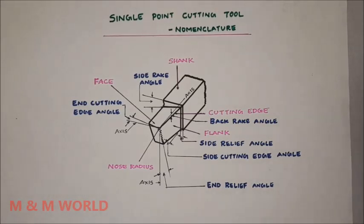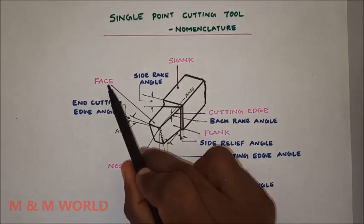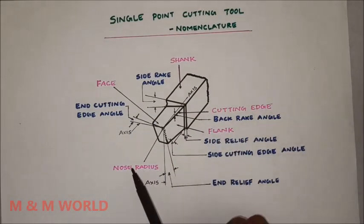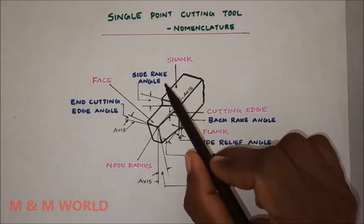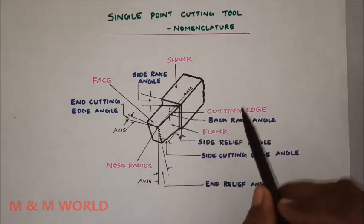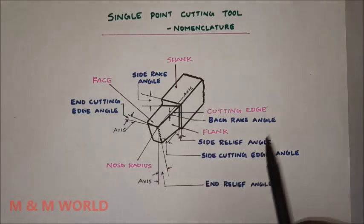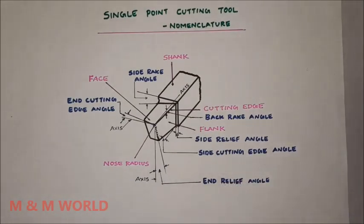Next is the nomenclature of a single point cutting tool, which includes various tool elements and tool angles. The tool elements are: face, shank, cutting edge, flank, and nose radius. The angles involved are side rake angle, back rake angle, side relief angle, side cutting edge angle, end relief angle, and end cutting edge angle — giving two rake angles, two relief angles, and two cutting edge angles.